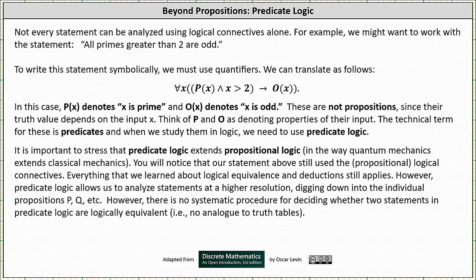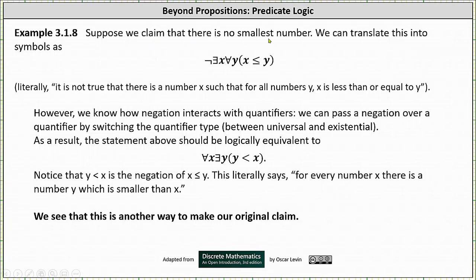Let's look at an example. Suppose we claim there is no smallest number. We can translate this into symbols as: there does not exist a number x for every number y such that x is less than or equal to y.